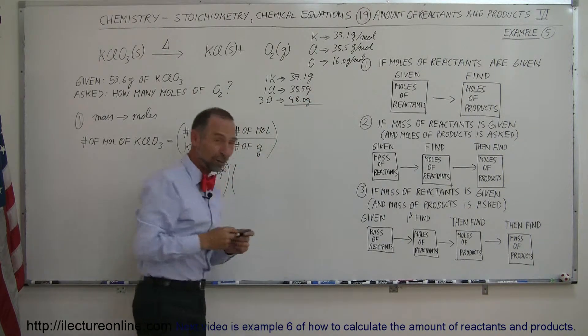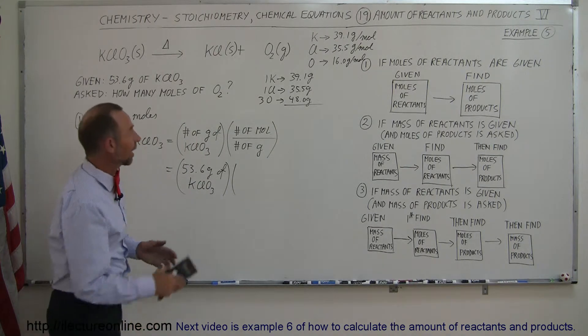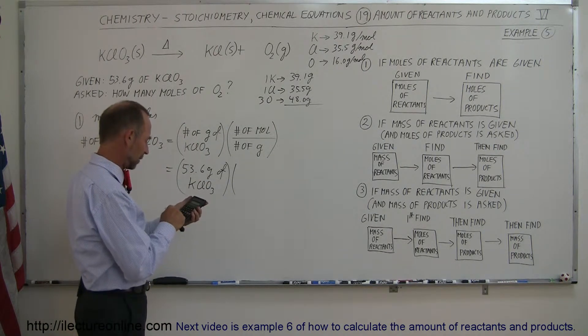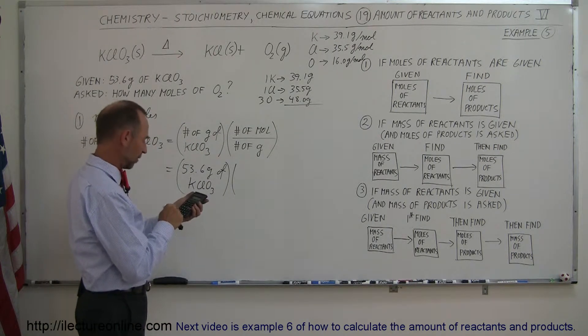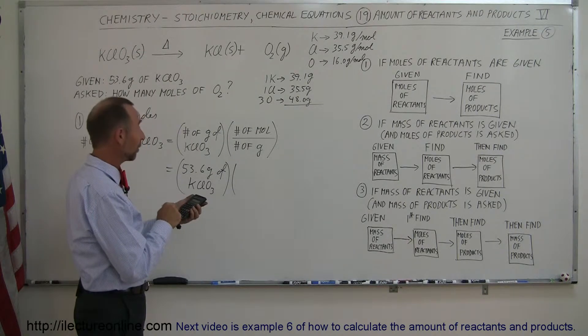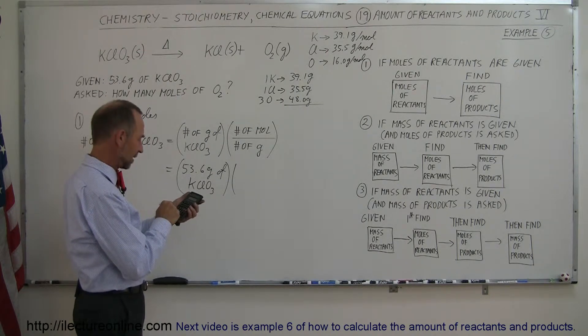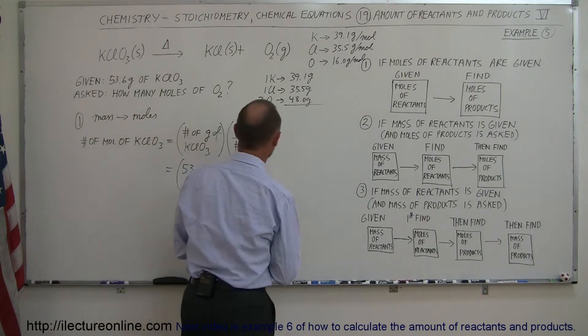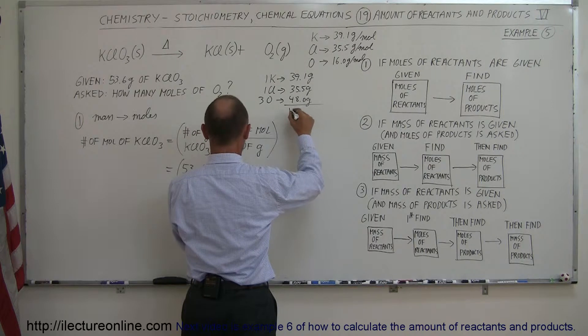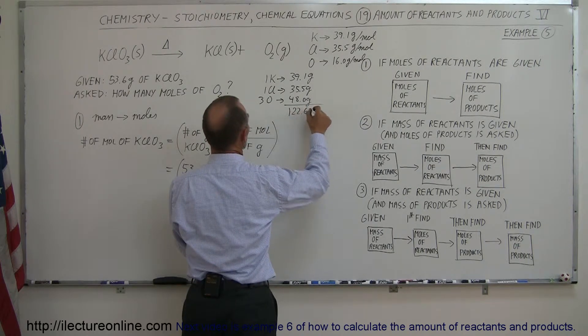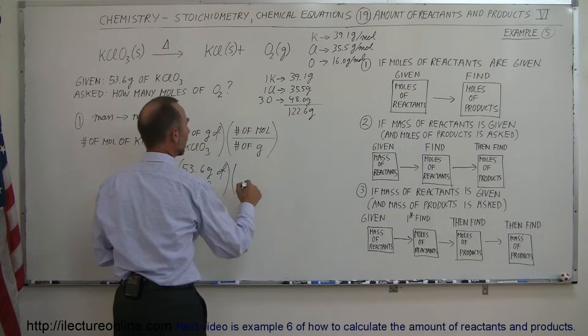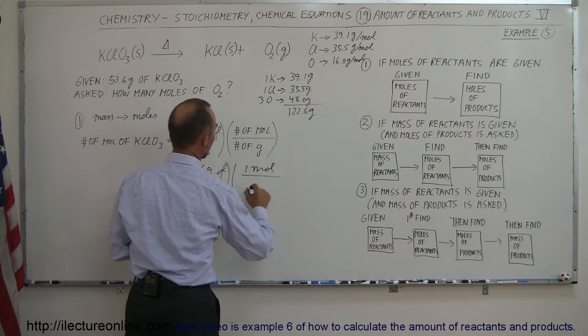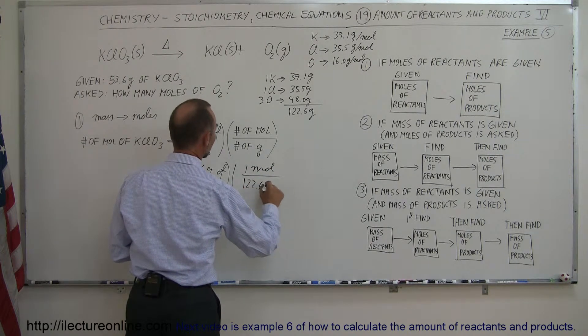So when we add all that together, we have the molar mass of potassium chlorate. So 39.1 plus 35.5 plus 48 equals 122.6 grams per mole. So one mole of potassium chlorate is 122.6 grams in mass. So here we need one mole per 122.6 grams.